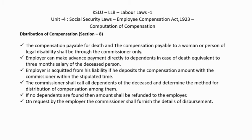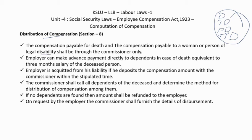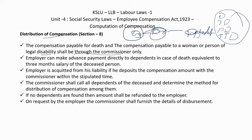Section 8 deals with distribution of compensation. Once compensation is calculated — for death, total disablement, partial disablement, or temporary partial disablement — in the case of death, compensation payable to a woman or person under legal disability shall be distributed through the commissioner only. The employer must transfer the compensation to the commissioner's account, and then the commissioner distributes it to the dependents. The employer's responsibility ends once the amount is transferred to the commissioner.